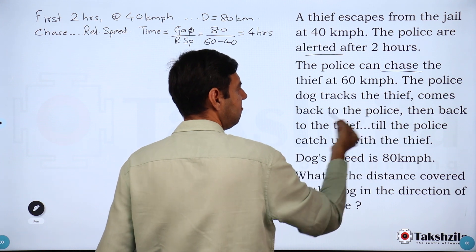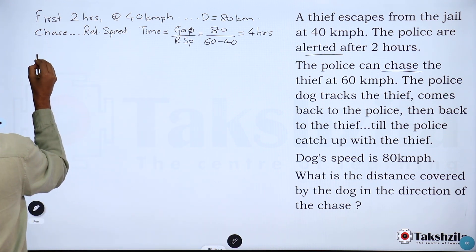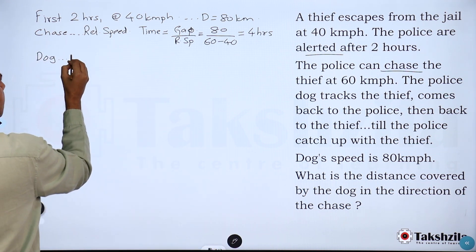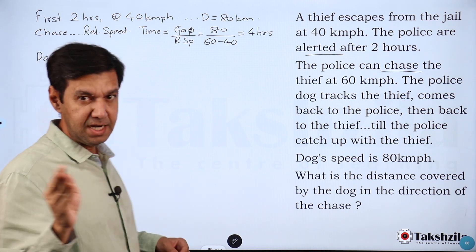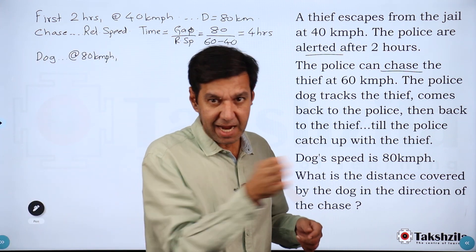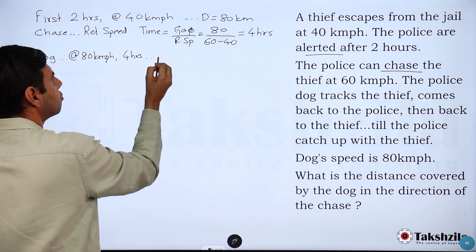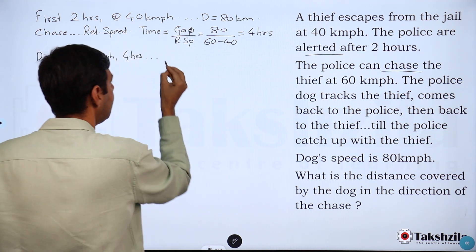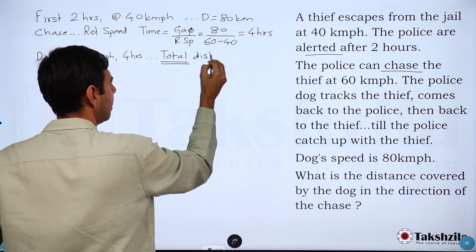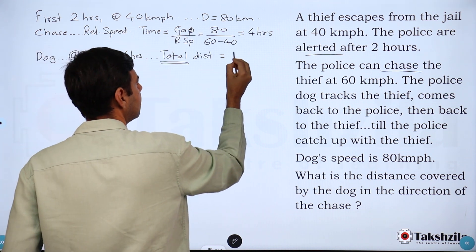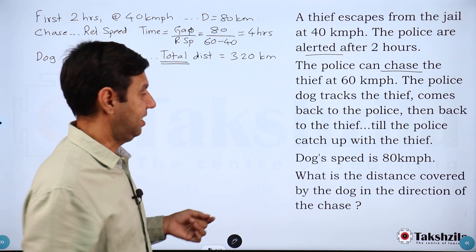Now, the dog runs back and forth — from police to thief and back — and the dog's speed is 80 km/h. The dog is running non-stop, back and forth, for the full four hours. So the total distance covered by the dog is 80 × 4 = 320 kilometers. The total is easy, but what about the distance in the direction of the chase?